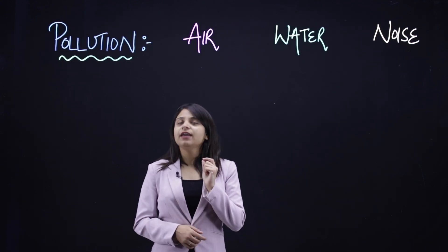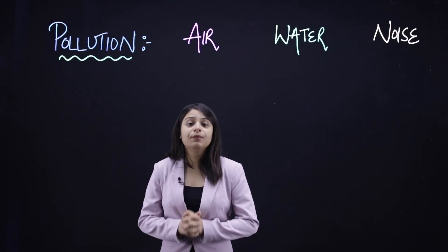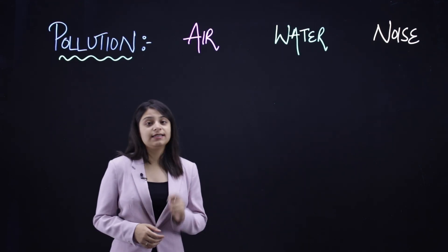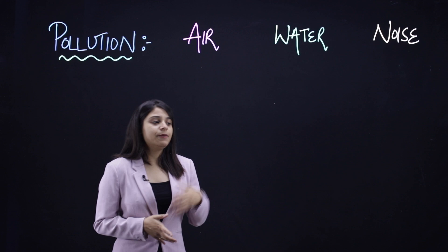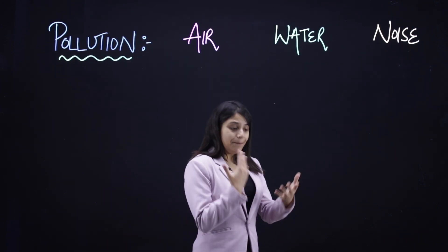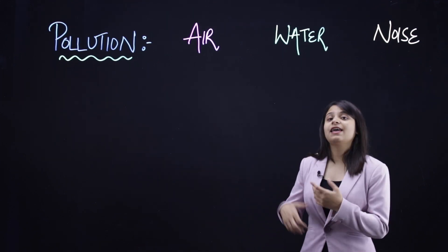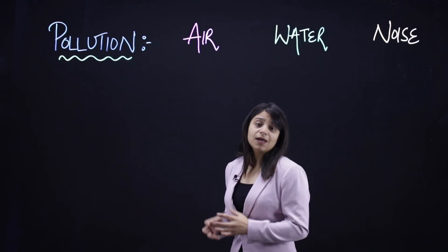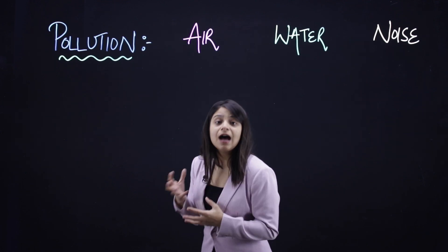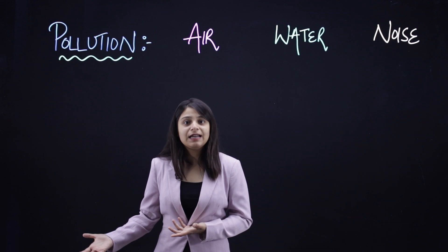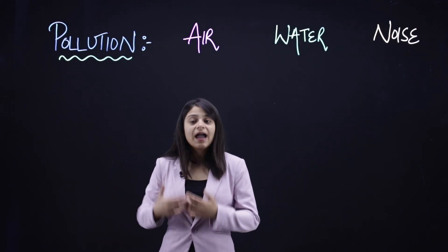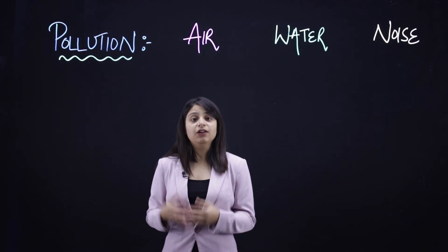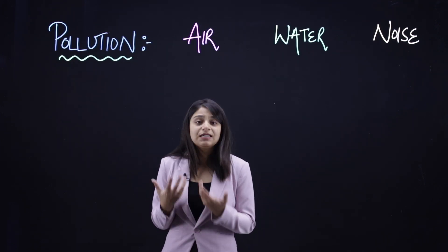Pollution is distributed into air pollution, water pollution, and noise pollution. Air pollution happens because there are pollutants in the air. In India, especially in winters, air pollution is a very big problem — people start buying masks and suffer from respiratory diseases like asthma and breathing problems. This happens because pollutants are present in the air, and we cannot avoid it since we are always breathing.